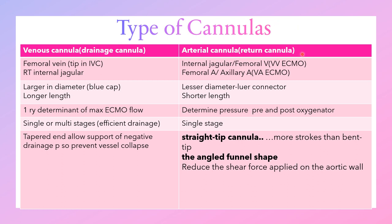The second type is the arterial cannula, or return cannula. Its site depends on the type of ECMO. If it's veno-venous ECMO, it will be inserted in the internal jugular vein or femoral vein. If it's veno-arterial ECMO, it will be inserted in the femoral artery or axillary artery. It has a lesser diameter and shorter length than the venous cannula. If inserted in the artery, it will have a side port to connect a reperfusion cannula, allowing perfusion of the limb distal to the cannula. We can also determine pressure pre- and post-oxygenator.